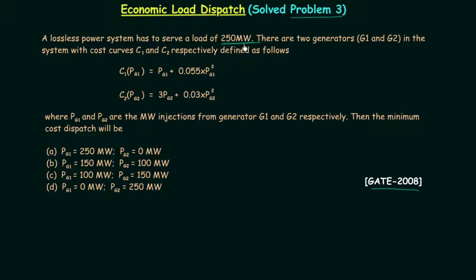The load is 250 megawatts and there are two generators, G1 and G2, in this system with cost curves C1 and C2 respectively defined as follows. You can see how the two cost curves are defined here.